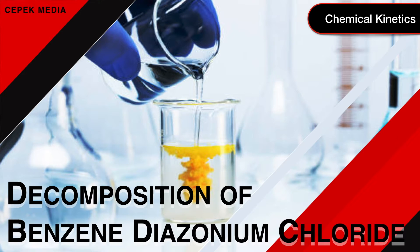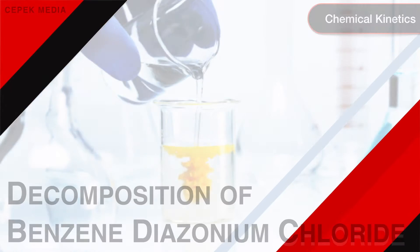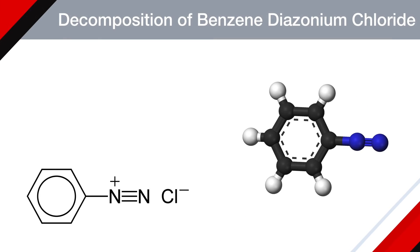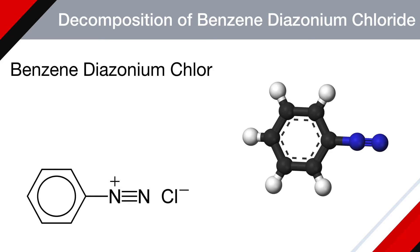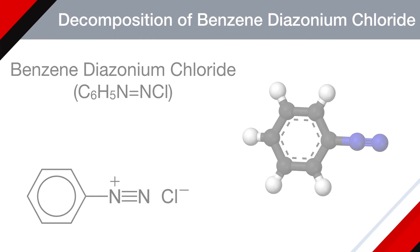Discuss the kinetics of decomposition of benzene diazonium chloride. Benzene diazonium chloride is an organic compound. It is a salt of diazonium cation and chloride ions. It exists as a colorless solid that is soluble in polar solvents like water.